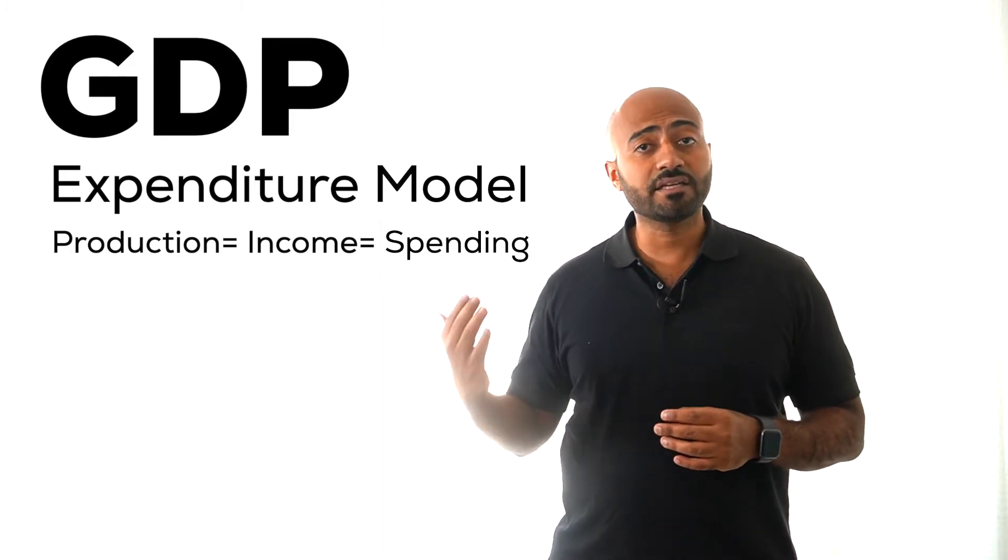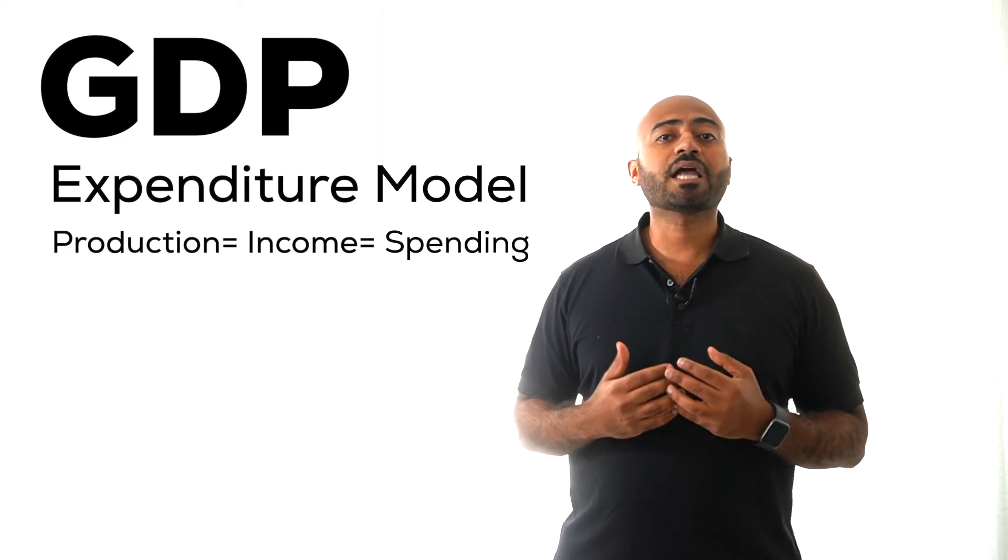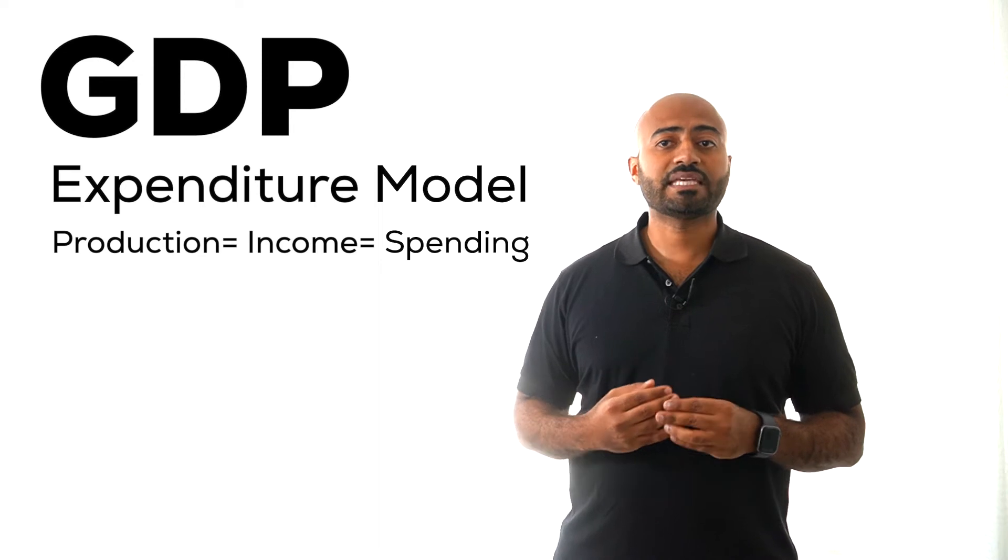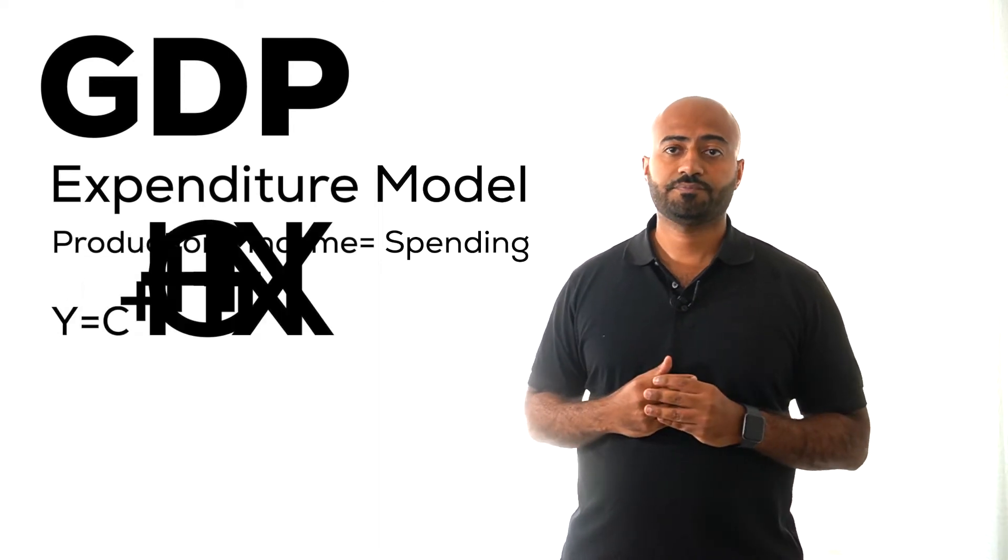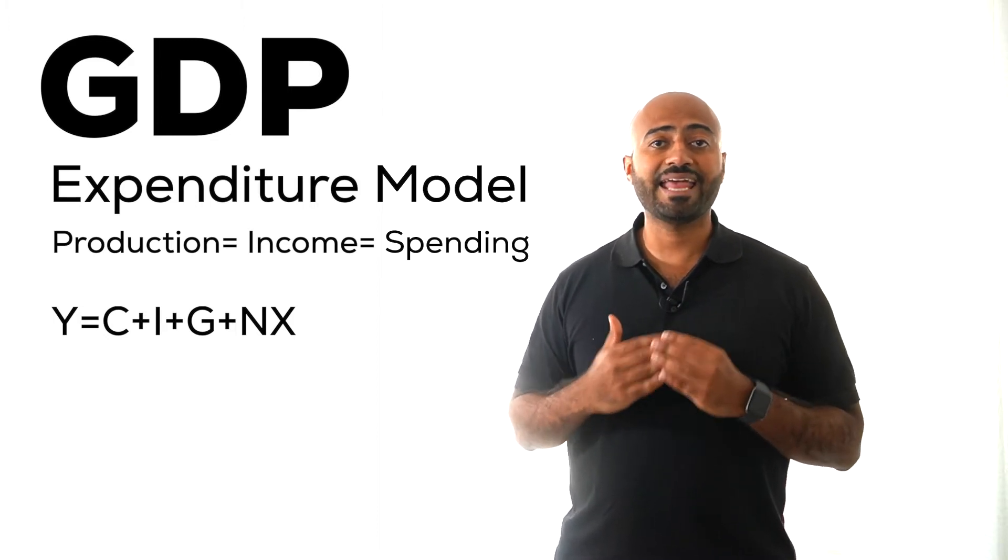So instead of calculating the products, calculate the spending. The expenditure model breaks the economy to four sections and can be presented in this equation. Y equals C plus I plus G plus NX.